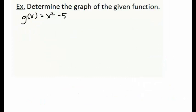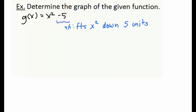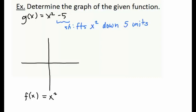Let's plot the function g(x) = x² - 5. This function g(x) is going to look very similar to our basic function x² except we have a minus 5, and this minus 5 is going to shift that basic function down 5 units. Let's begin by plotting our basic function x². We know that x² has a minimum at (0, 0) and it opens up on either side of its minimum point.